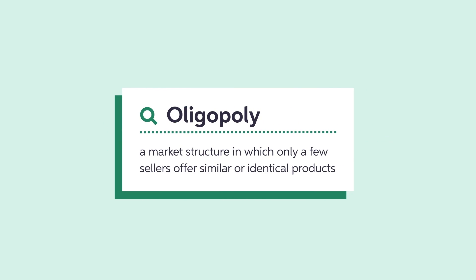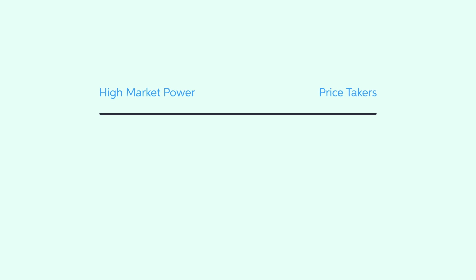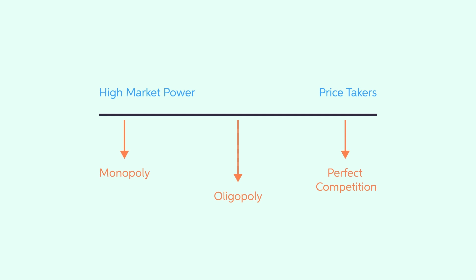An oligopoly is a market structure in which only a few sellers offer similar or identical products. An oligopoly with only two competing firms is called a duopoly. Unlike firms in a perfectly competitive market, an oligopolistic firm can, in some cases, enjoy a degree of market power. Its market power, however, is rarely going to be as extreme as that of a monopolist.